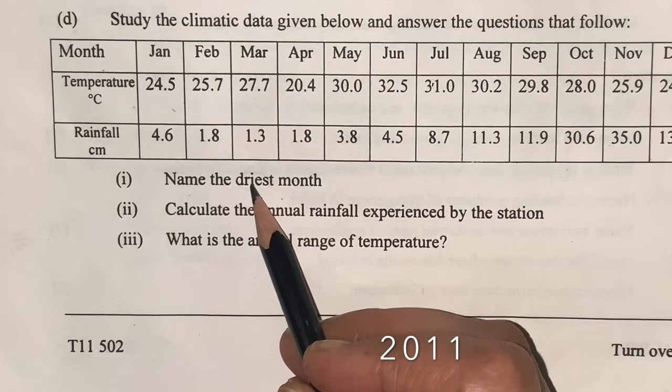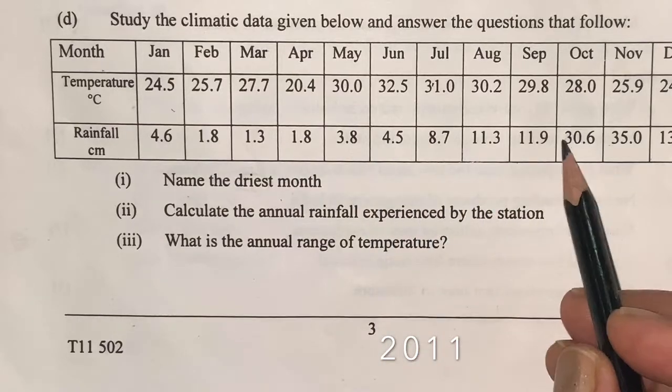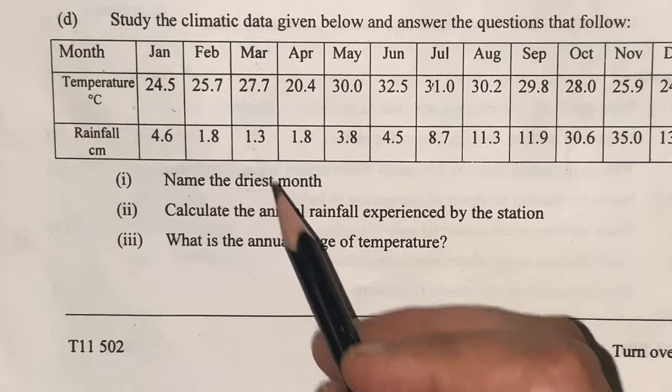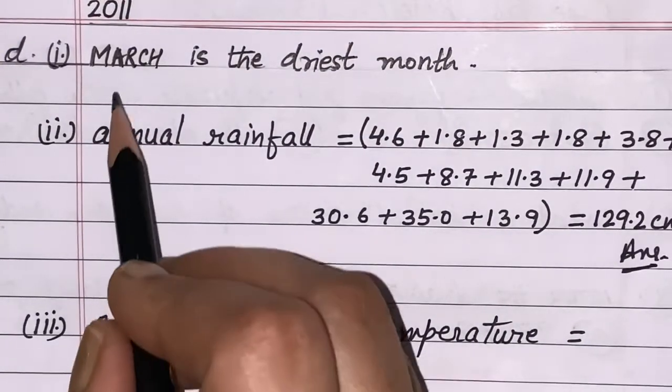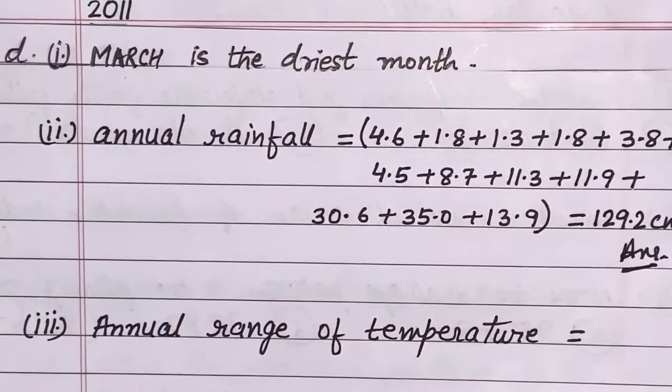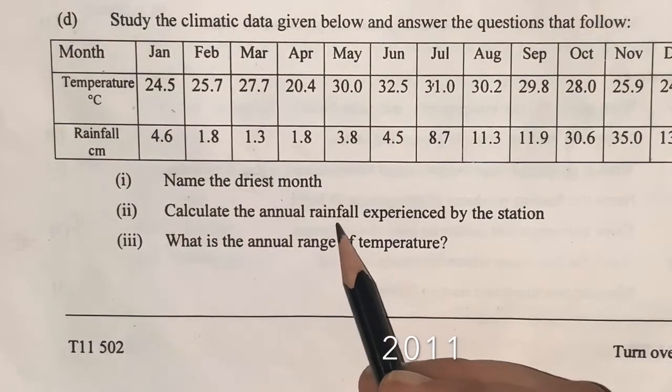Here in the given data, we will see that the least rainfall is in March, that is 1.3 centimeter. Thus the answer will be: the driest month is March. Second question is calculate the annual rainfall experienced by the station.